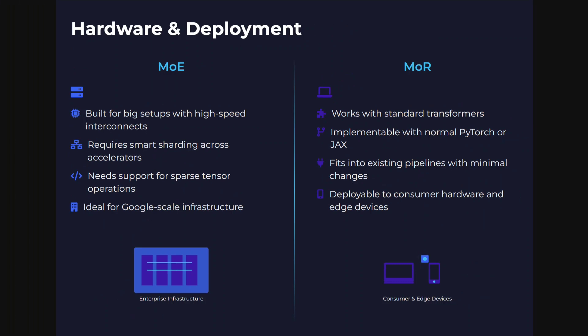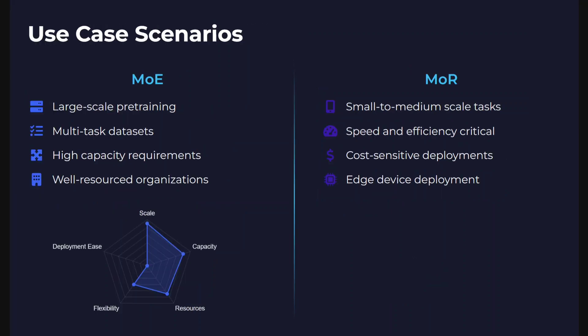On hardware and deployment, MoE is built for big setups — huge models of 1 trillion or 690 billion parameters — requiring smart sharding across accelerators, support for sparse tensors, and Google-scale infrastructure. MoR works with standard transformers, is implementable with normal PyTorch and JAX, fits in existing pipelines, and is deployable at the consumer end. For use cases, MoE suits large-scale pre-training and high-capacity requirements, while MoR is for smaller LLMs where speed, efficiency, cost sensitivity, and edge device deployment are critical.